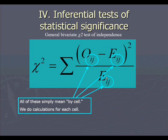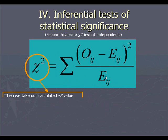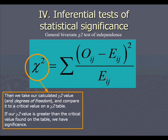Again, the subscripts represent the fact that we're talking about each individual cell. And the giant sigma at the front of the formula tells you that we're going to add a whole bunch of these things together. We take our calculated chi-square, which we get using the formula, and the degrees of freedom, and we compare it to the critical value on the chi-square table. If our chi-square value is greater than the critical value we found, we can say that we have statistical significance.